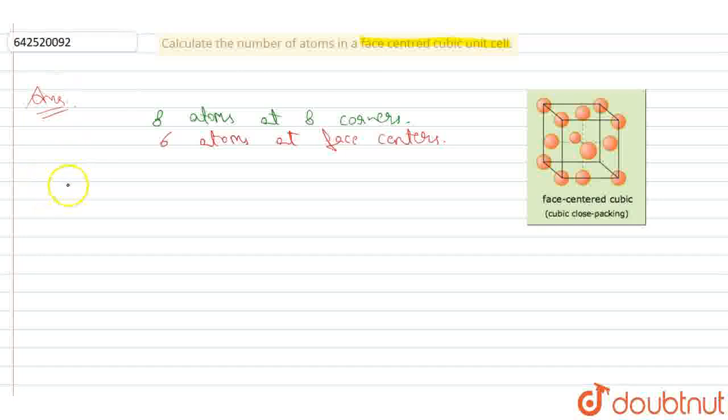Now for the corners, each corner contributes to 8 cells. So the per unit cell contribution is 1/8 × 8, which equals 1 atom.